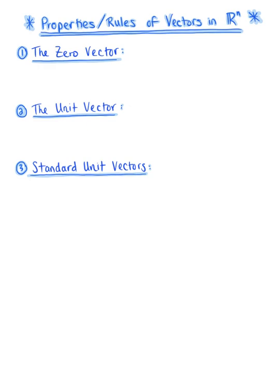Here we're exploring some rules and properties of vectors in R-n. The first property is the zero vector, which is more of a statement than a property. The zero vector is defined as zero with the vector bar on top. The zero vector is not equal to zero. Zero is a scalar — it has no direction, no magnitude, it's a single point — whereas the zero vector is a vector. This demonstrates that points are different from vectors.